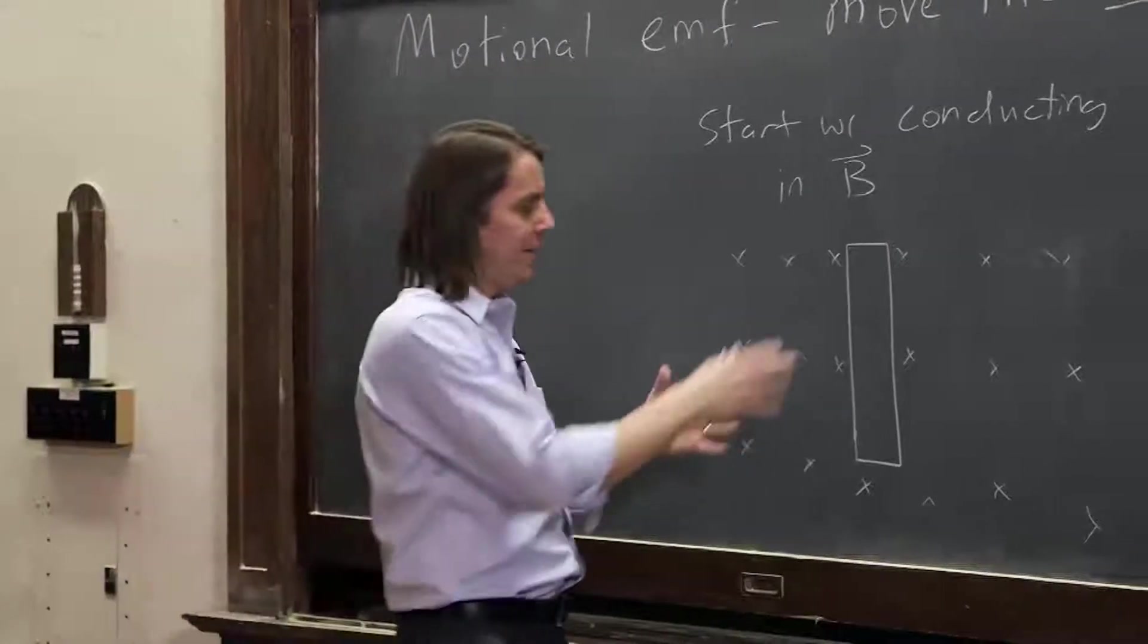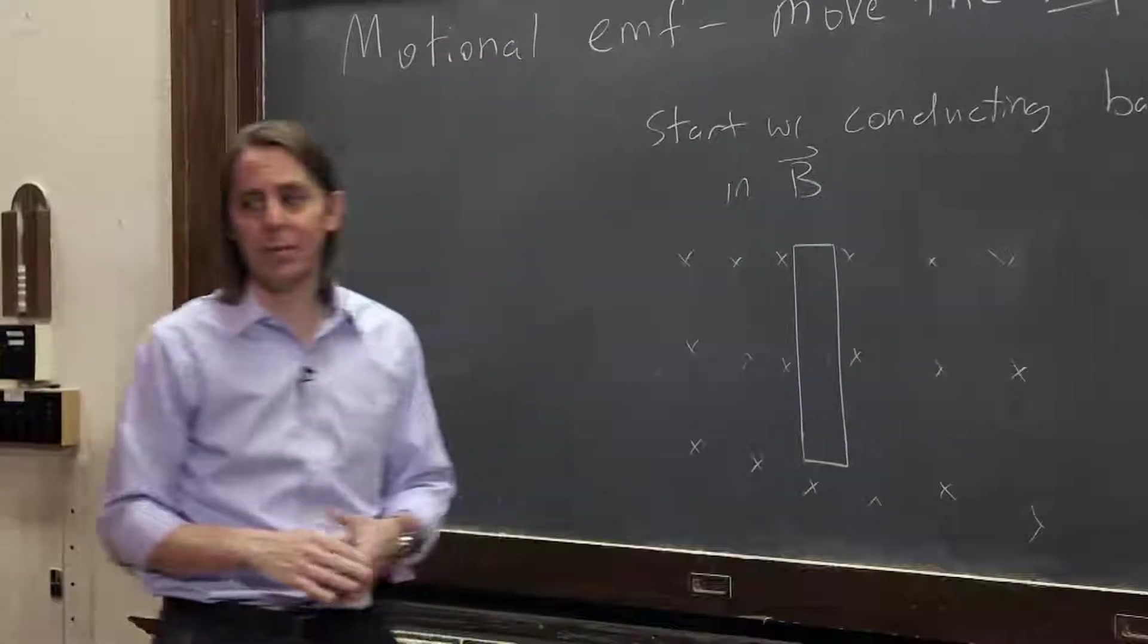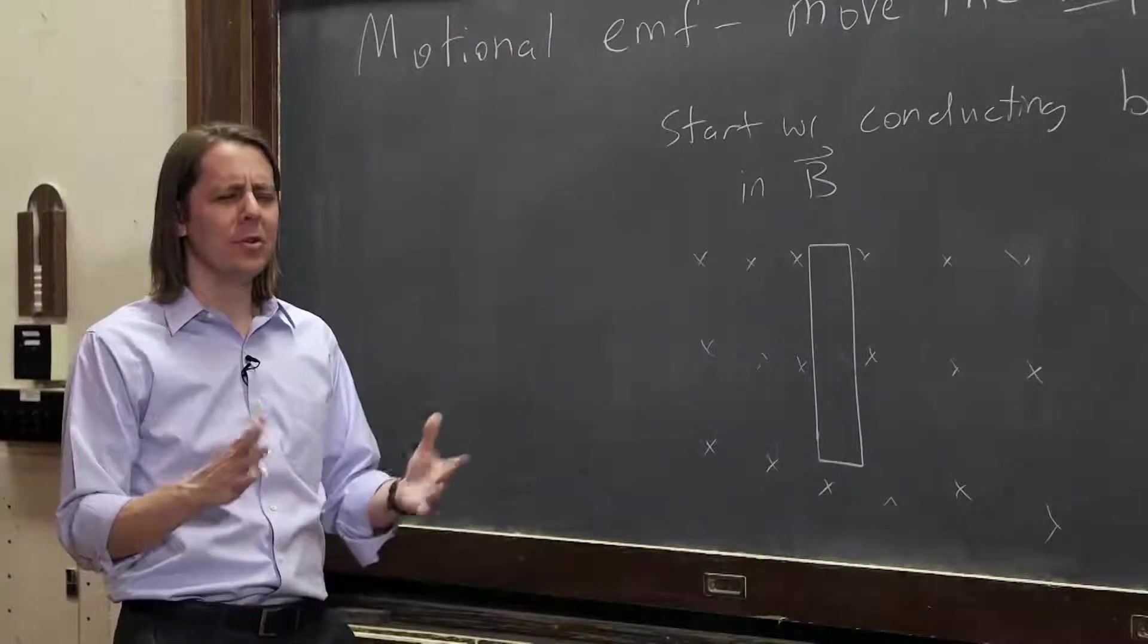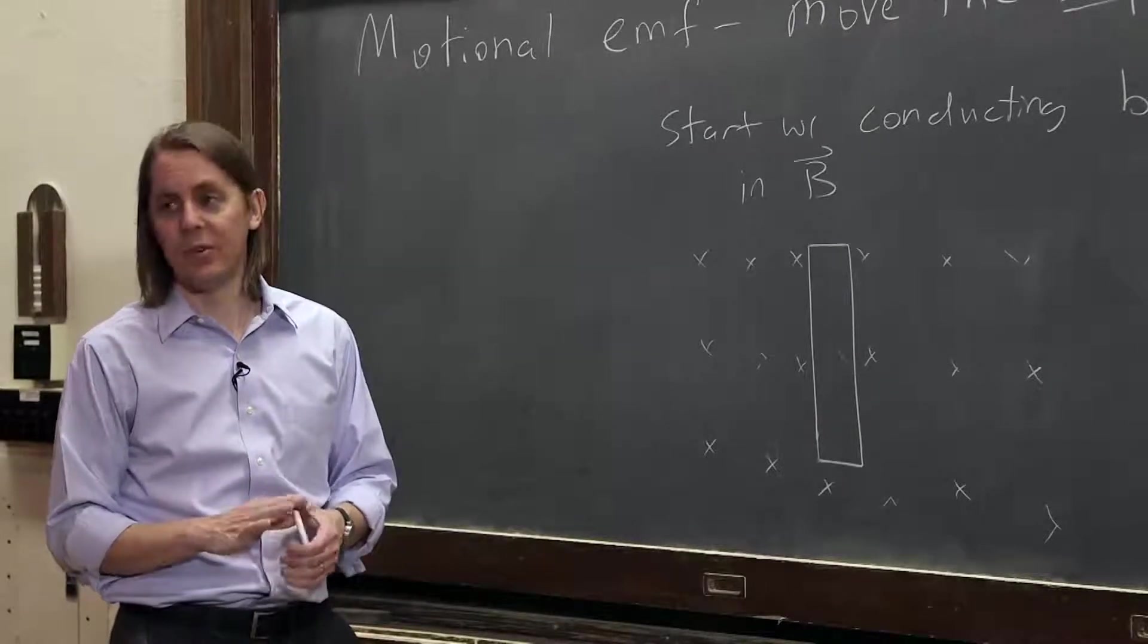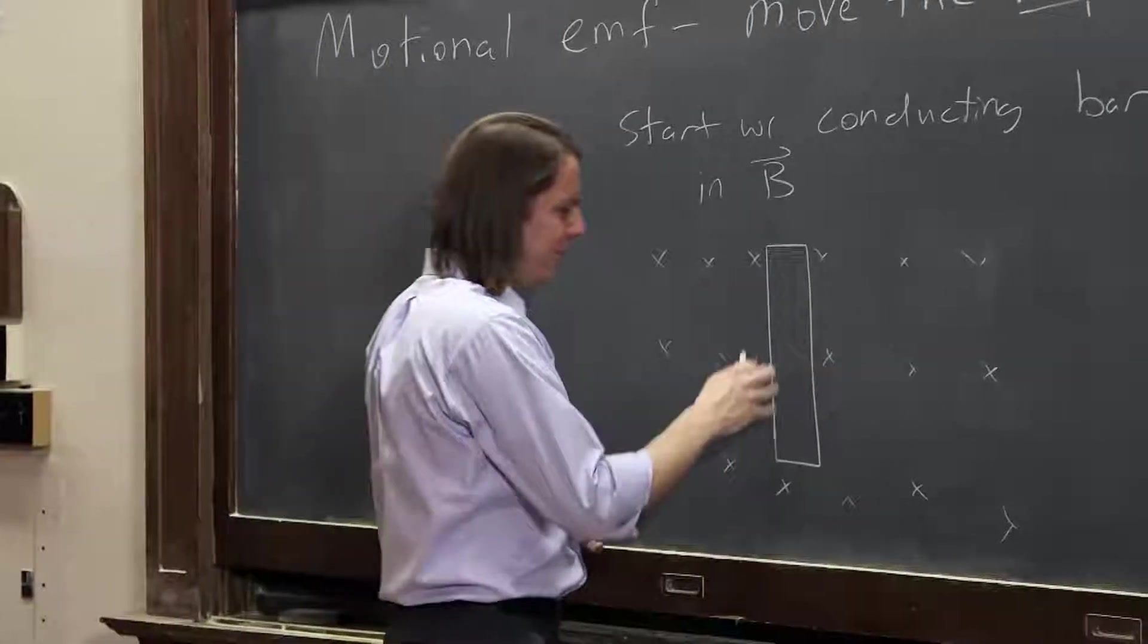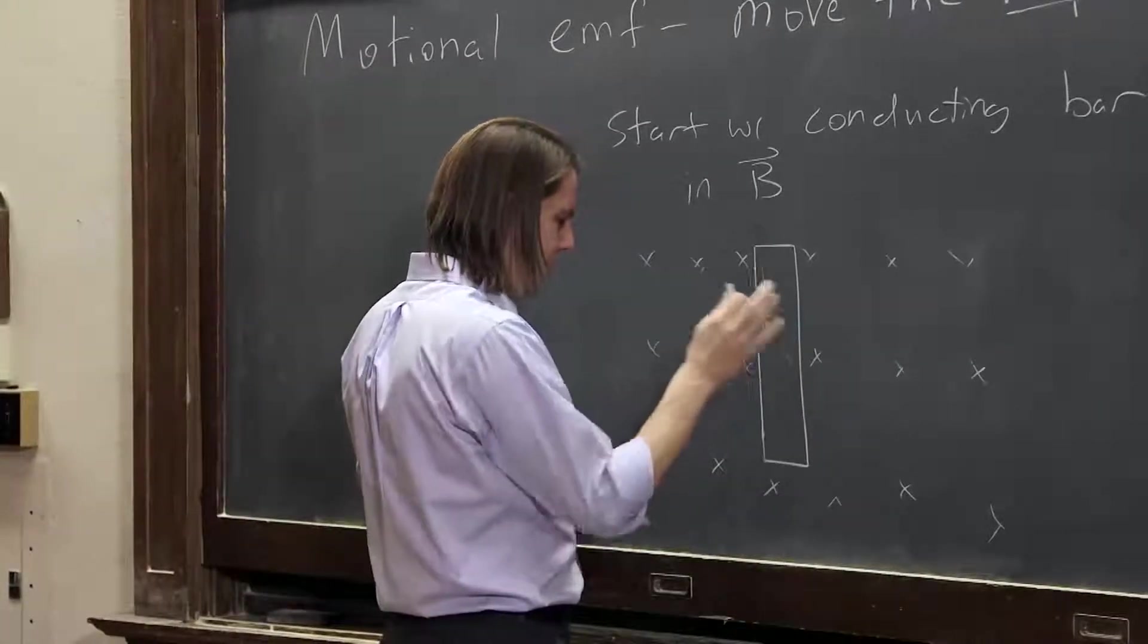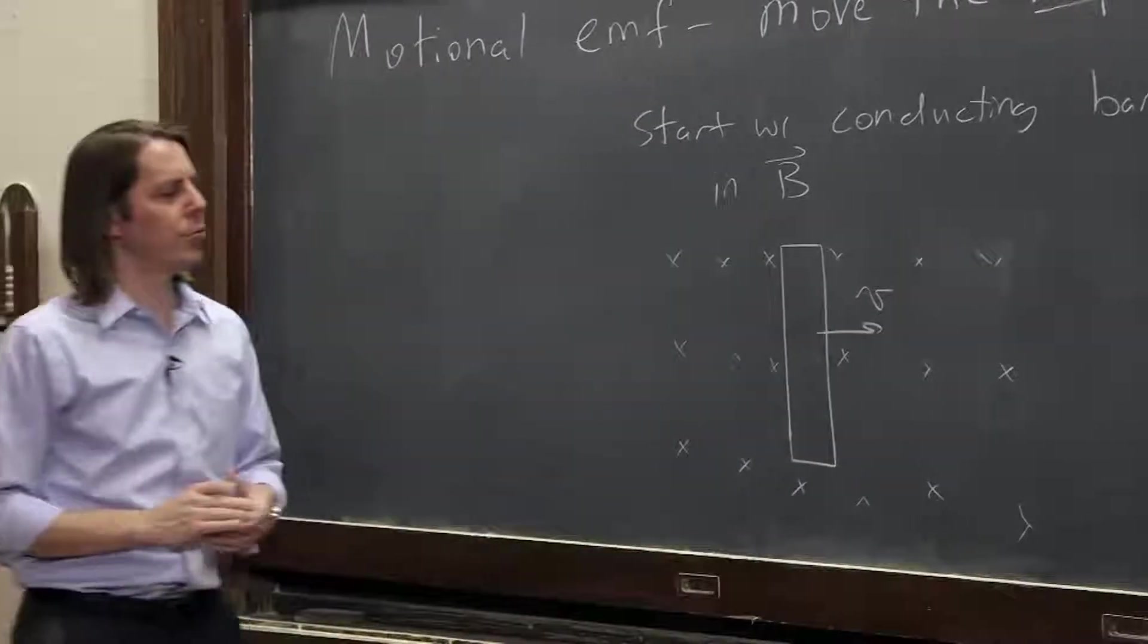So we have charges in here, and since it's a conductor, we have charges that are free to move. Let's keep it real and treat it like a metal. So let's say that the electrons, the negative charges are free to move, the positive charges are stuck. So we have a bunch of electrons, negatively charged, free to move, with a velocity like this. Let's say we let it move to the right.